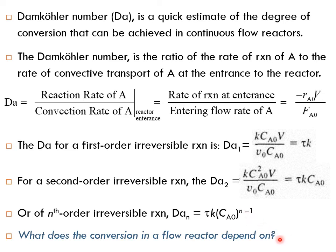So this would help you to answer this question: what does the conversion in a flow reactor depend on? If you want to know the conversion, you look at the Damköhler number. And beyond that, you look at the equation for Damköhler number. This shows that the conversion is a function of τ (tau),